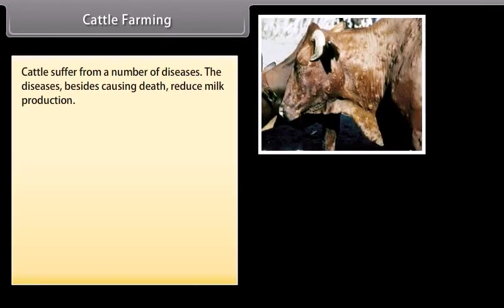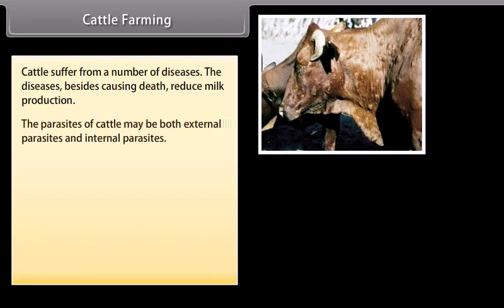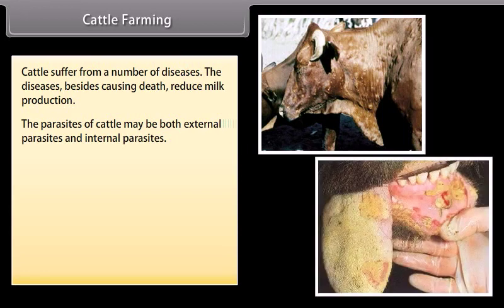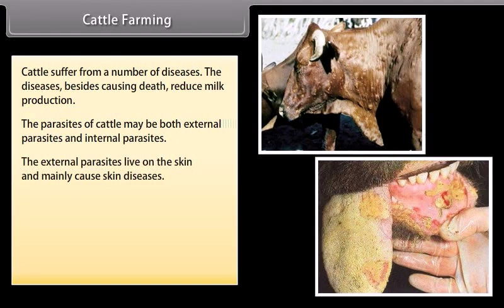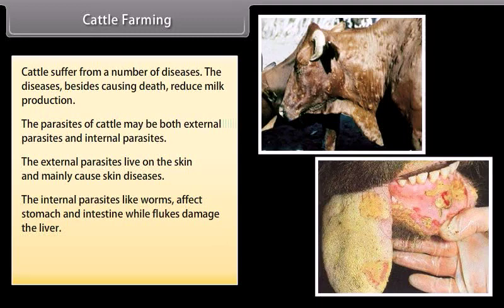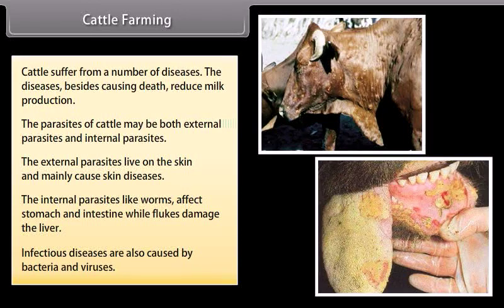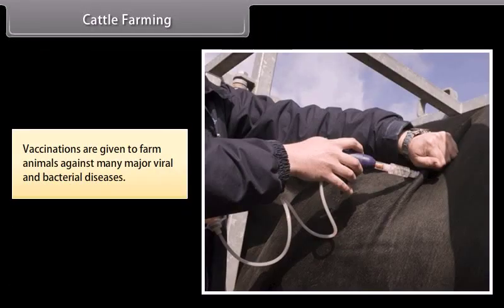Cattle suffer from a number of diseases; besides causing death, these diseases reduce milk production. The parasites of cattle may be both external and internal. External parasites live on the skin and mainly cause skin diseases. Internal parasites like worms affect the stomach and intestine, while flukes damage the liver. Infectious diseases are also caused by bacteria and viruses. Vaccinations are given to farm animals against many major viral and bacterial diseases.